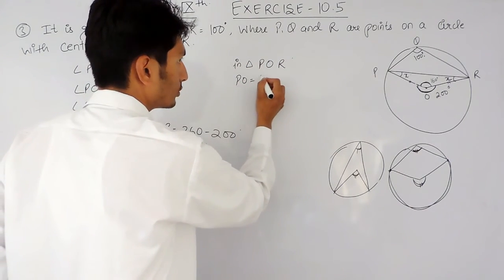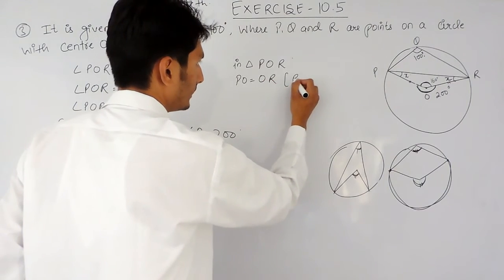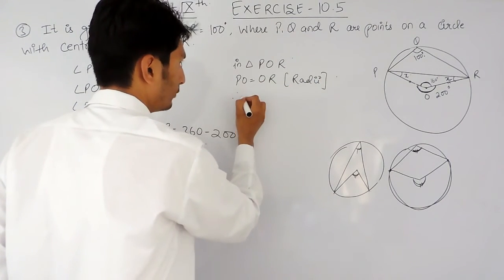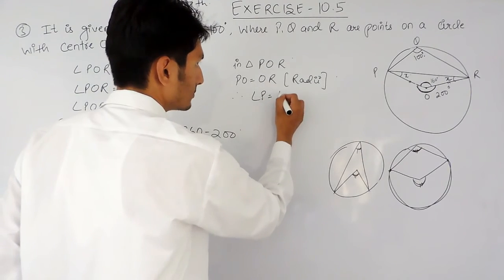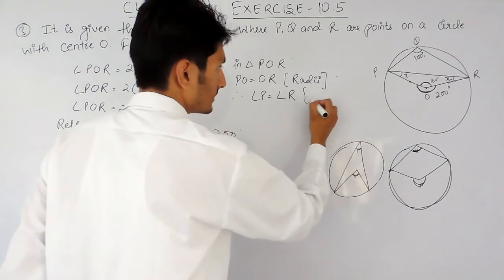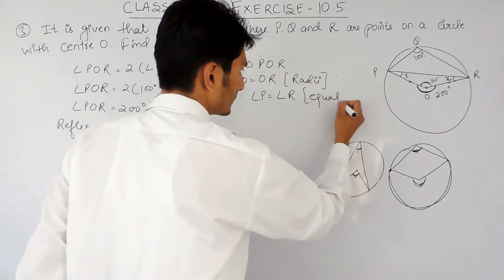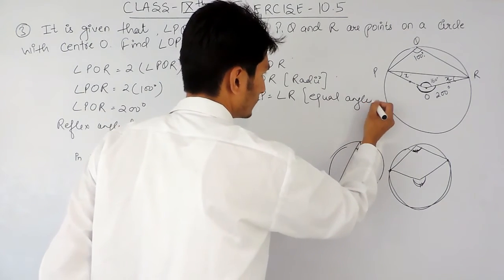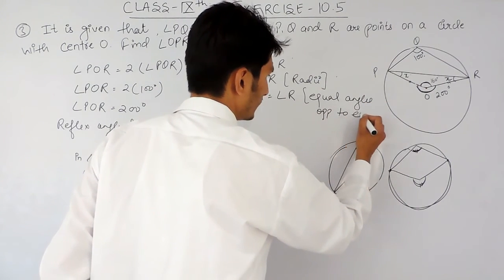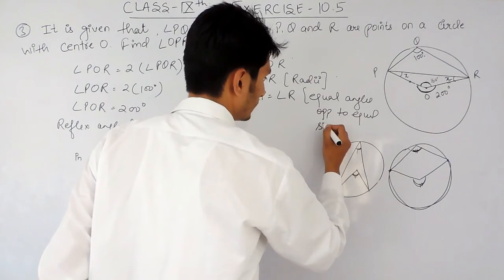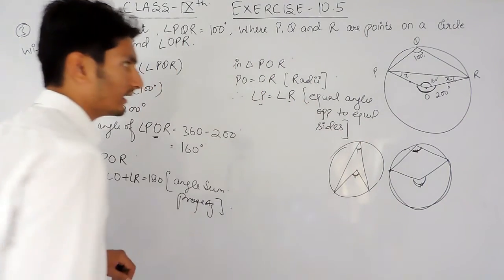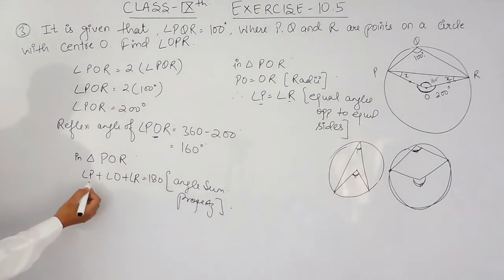In triangle POR, PO is equal to OR as equal radii. Therefore angle P must be equal to angle R, because equal angles are opposite to equal sides.